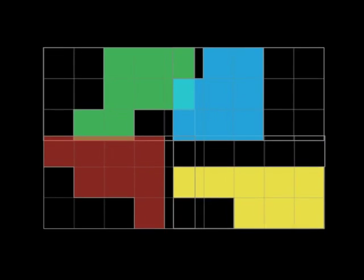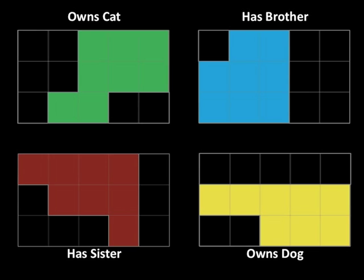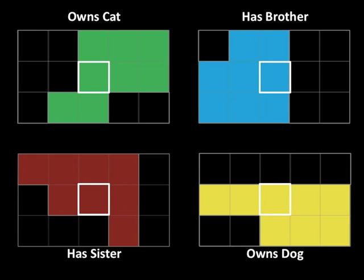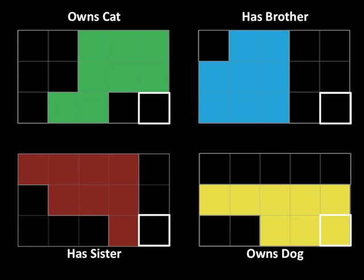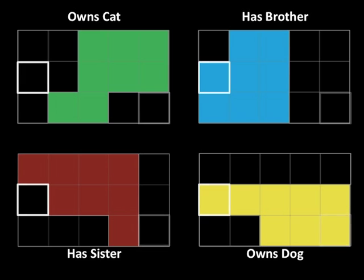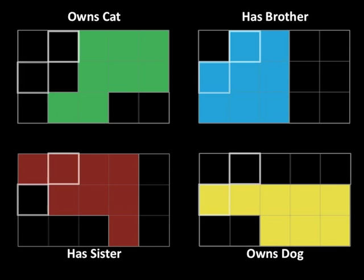Is this a Venn diagram? It's impossible to say when it looks like this, but let's take it apart and look at the four shapes that overlapped to produce that image. Where would you sign your name if you owned a cat, had a brother, owned a dog, and had a sister? Right in the middle. Which square would you choose if you owned a dog but nothing else? Lower right. Which square if you owned a dog and had a brother but nothing else? Middle left. Where would you go if you had a brother and a sister but no pets? That square there.